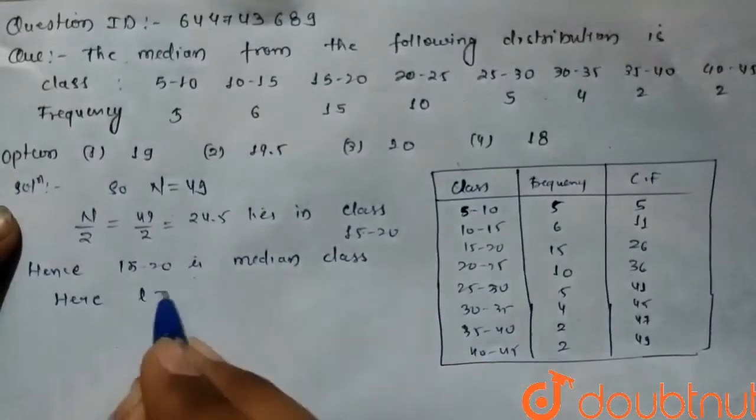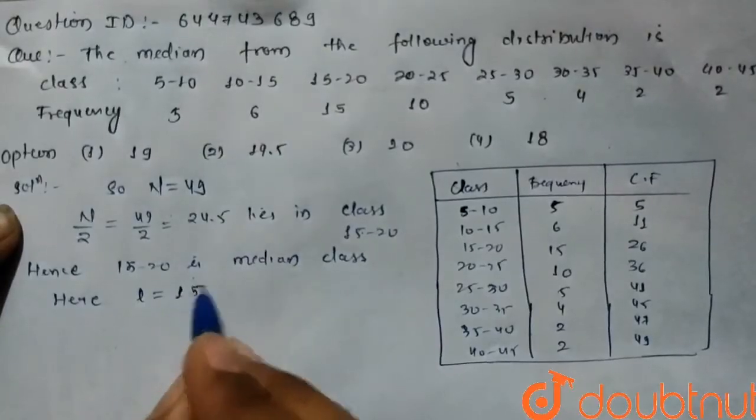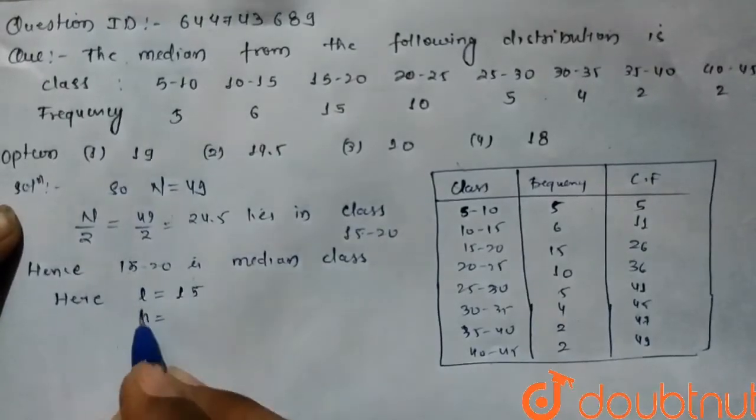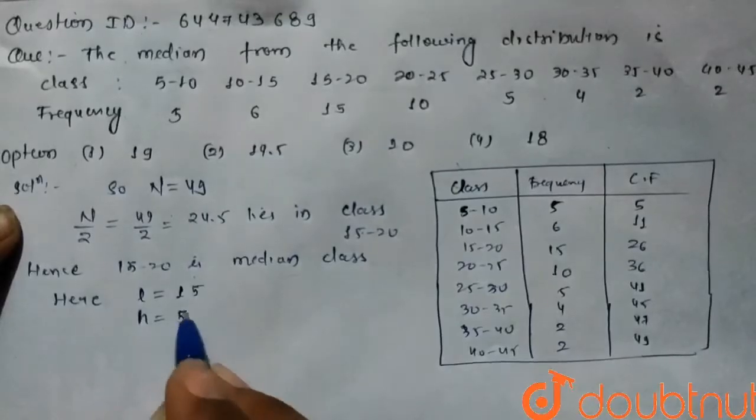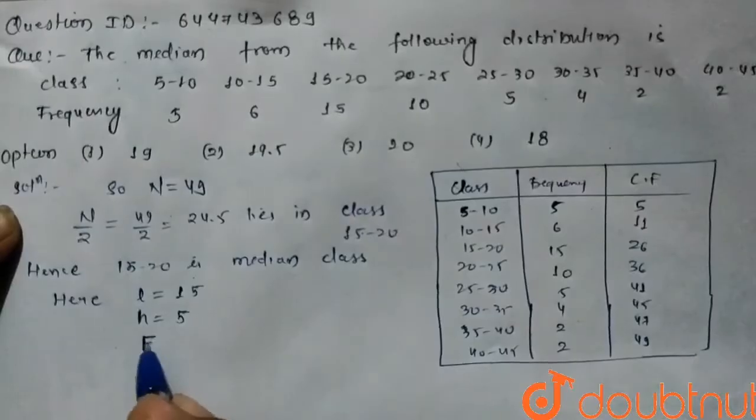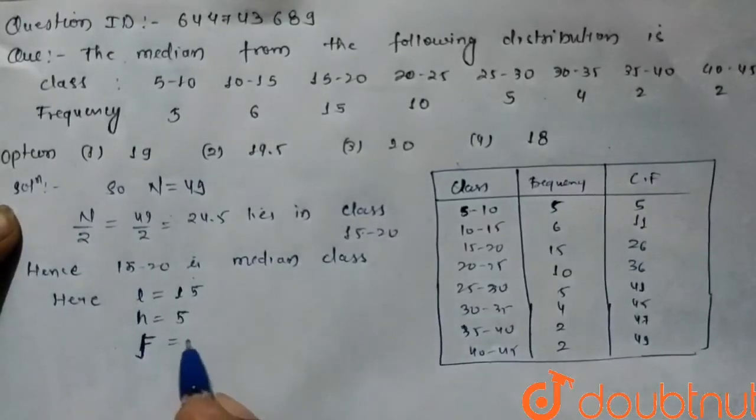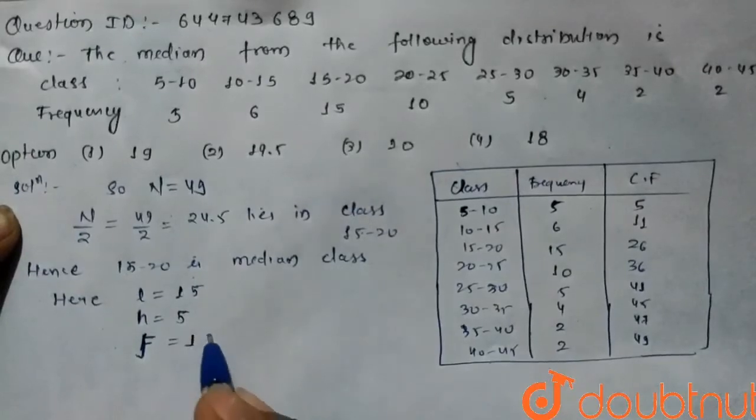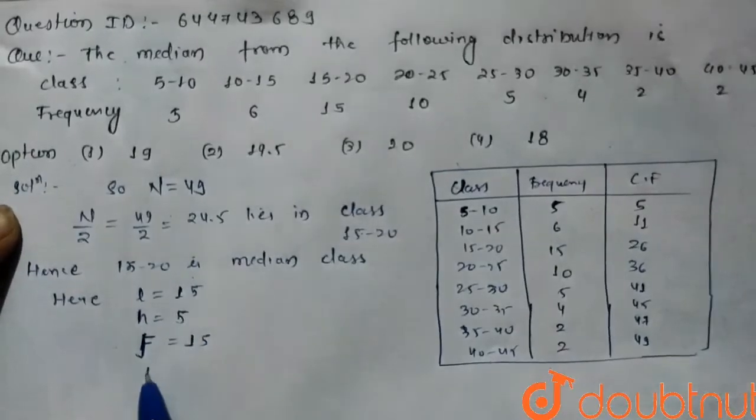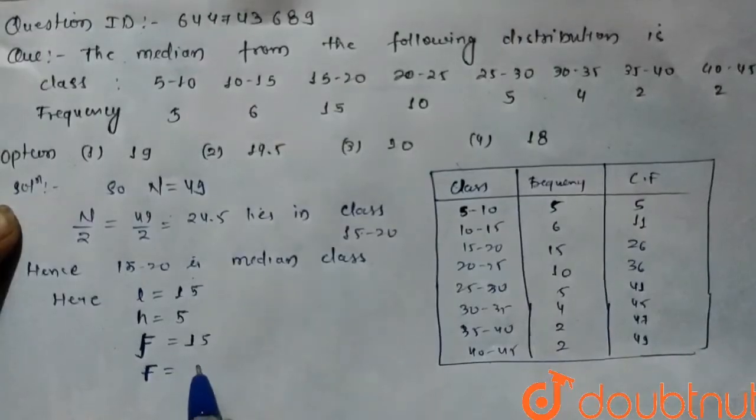Here, L is equal to lowest term of the class which is 15, the class difference is 5, here our frequency small f is equal to 15, and the cumulative frequency which is denoted by capital F of preceding class is equal to 11.